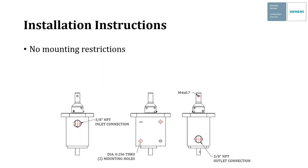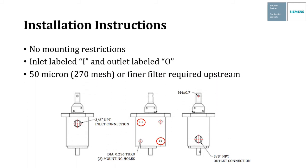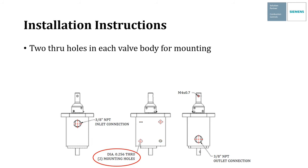Installation instructions are pretty straightforward. There are no mounting restrictions. The inlet is labeled with an I and the outlet is labeled with an O. We recommend a 50 micron or 270 mesh or finer filter upstream to protect the valve from contaminants in the fuel. There are two through holes in each valve body to allow you to mount it to a rigid surface. Clockwise shaft rotation increases flow. Of course we accommodate for that when we build these into VA assemblies. And there is absolutely zero maintenance required.